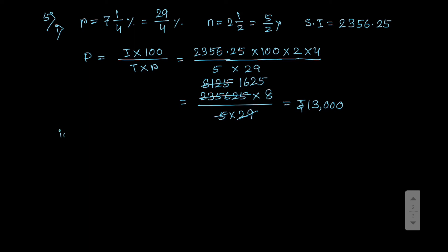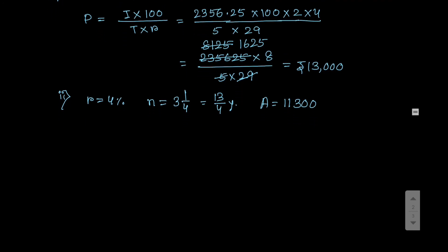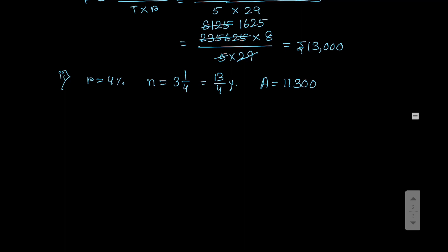Now sum number 5 part two. Here the given rate equals 4 percent per annum, and time is 3 years 3 months — that means 3 and one-quarter, so 13 by 4 years. The final amount is 11,300. You have to find the principal.